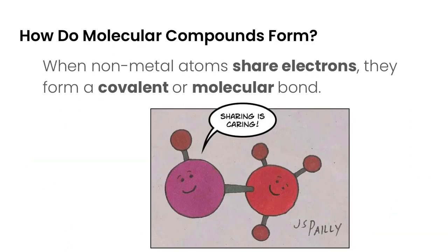So how do molecular compounds form? Well instead of giving up electrons, the non-metal atoms are going to share electrons. And so the sharing of electrons is what a covalent or molecular bond is.